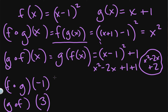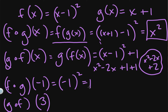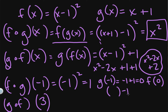Now, there are two ways to find f of g of negative 1. First, take the composition f of g of x, which we found is x squared, and plug in negative 1 — we get positive 1. Or, find g of negative 1 first: negative 1 plus 1 equals 0, then plug 0 into f of x — (0 minus 1) squared equals negative 1 times negative 1, which is positive 1. Both methods give the same answer.